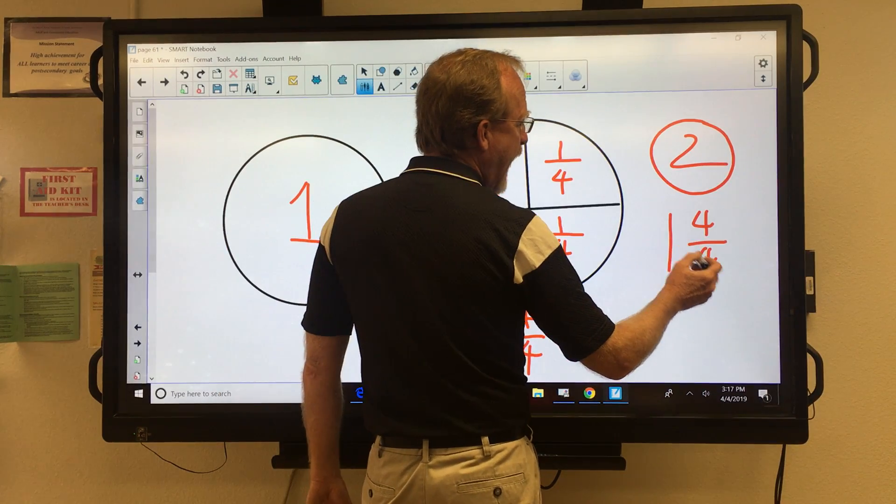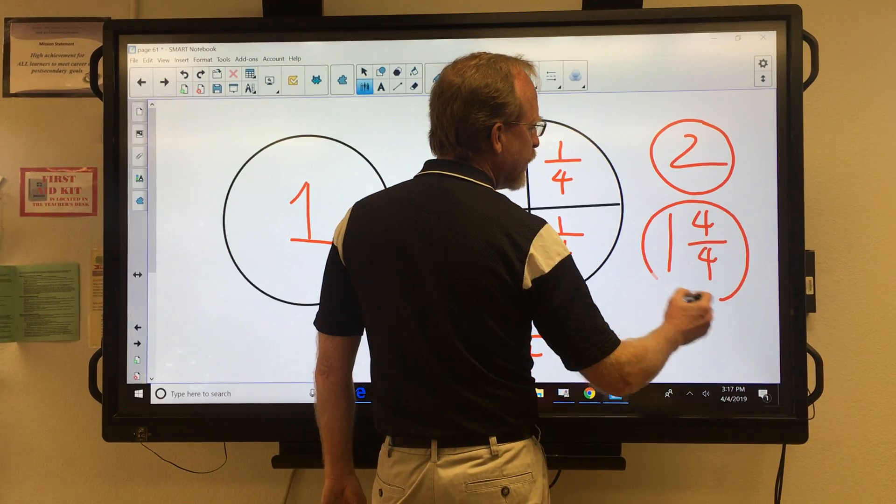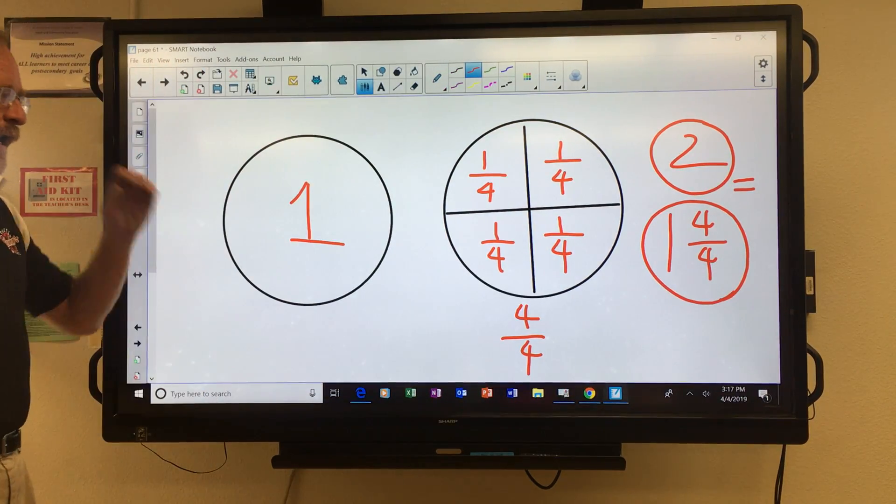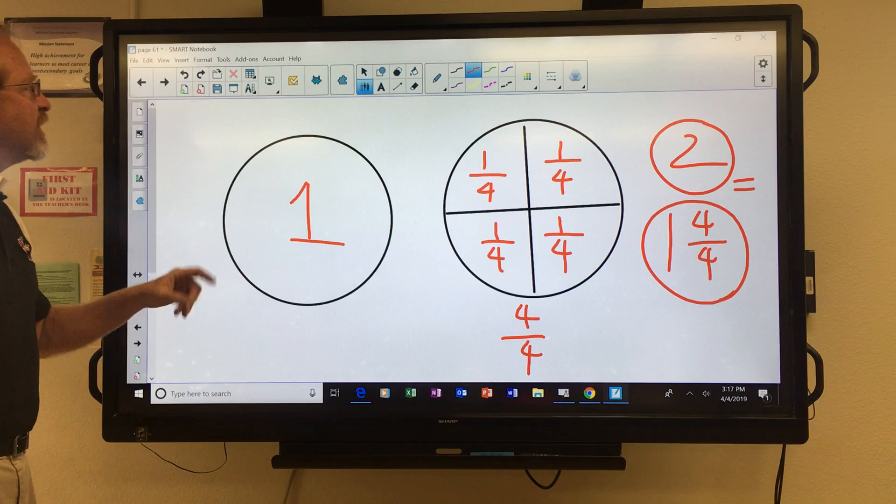So one and four-fourths is equal to two. They're basically one and the same. Now, that comes in handy a little further down the road.